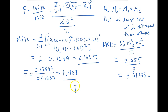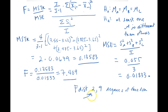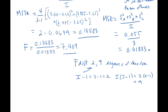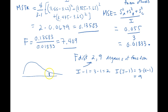I need to compare this to an F distribution with two and nine degrees of freedom. The numerator degrees of freedom is I minus one, which is 3 minus 1 equals 2. The denominator degrees of freedom is I times (J minus 1), which is 3 times (4 minus 1) equals 3 times 3, which equals 9. Using an F table, I look up numerator df of 2 in the top row and denominator df of 9 down the side.